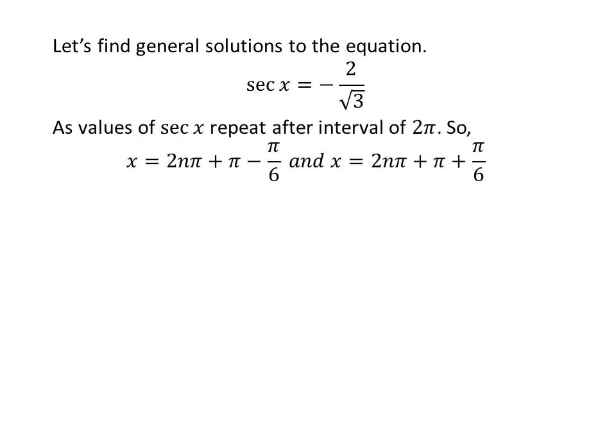Let us find the general solutions. Since the values of secant of x repeat after an interval of 2 times pi, the general solutions are 2 times n times pi plus pi minus pi upon 6, and 2 times n times pi plus pi plus pi upon 6, where n is an integer.